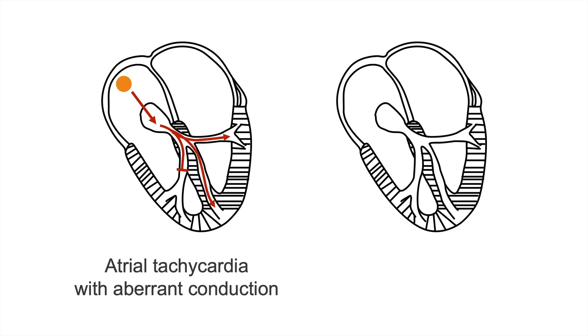In the second example, the pathologic pacemaker focus is situated somewhere in the ventricles and depolarizes the heart in the way we just described. This type of tachycardia is called ventricular tachycardia.